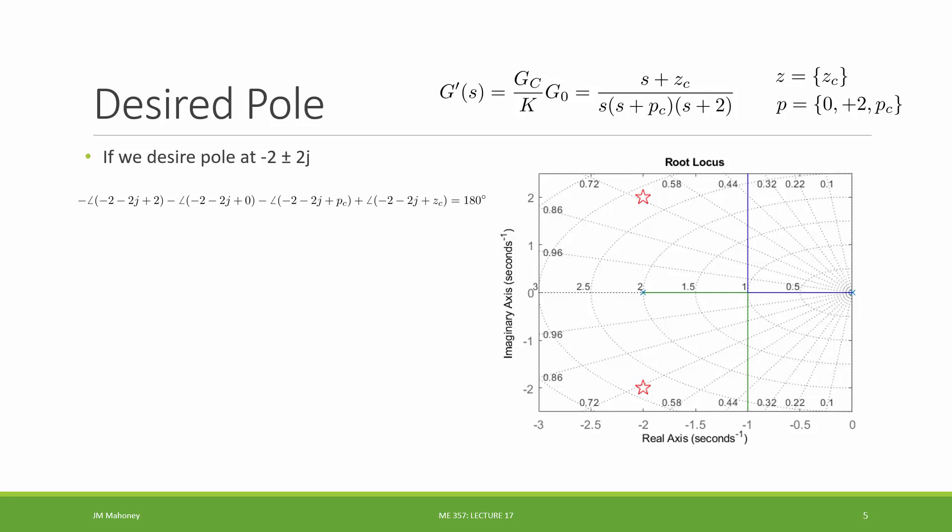So if we look at finding the angle of it, I have three p values. So I have three of these negative angles and one z. So I have one positive. So I'm going to, again, here use negative 2 minus 2j in for the s value everywhere. I could just as easily use minus 2 plus 2j. But as long as I use the same one everywhere, then this angle technique is going to work.